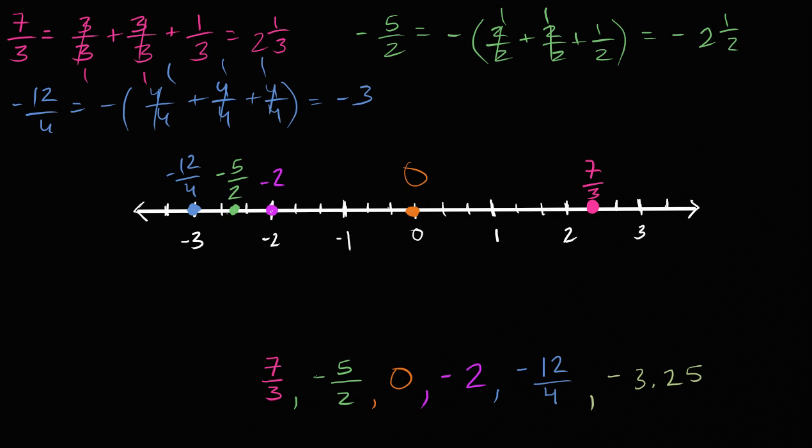And then finally, one more number, negative 3.25. So you could view this as the same thing as negative 3 and 25 hundredths. And 25 hundredths is the same thing as one fourth. 25 is one fourth of 100. So this is the same thing as negative 3 and one fourth. So let's see, let's go negative 1, negative 2, negative 3. And then we have to go a fourth. And we're not going to be able to do it super precisely, but it's going to be less than a third. So it's going to be right over there. So that right over there is negative 3.25.